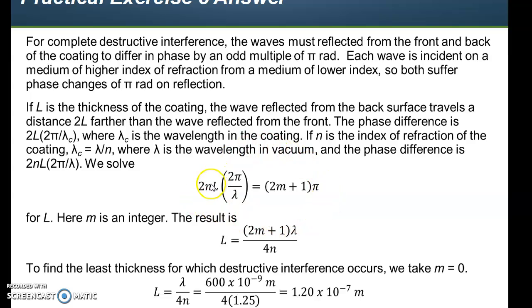When you solve those equations, you get 2NL, the thickness, times 2 pi over lambda equals 2M plus 1 pi. M is an integer, and for this, the result is the least destructive one, and we'll just start with M equals 0. And then, L equals lambda over 4 times the index of refraction. In this case, the lambda is 600 times 10 to the minus 9 meters, divided by 4 and the index of refraction of that film is 1.25.